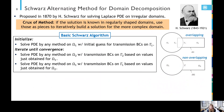The first topic is the Schwartz alternating method. The Schwartz alternating method is perhaps the oldest known method for domain decomposition, proposed in 1870 by Hermann Schwartz for solving the Laplace equation on irregular domains. It's based on a very simple idea: if you want to solve a problem on a complex domain, you can decompose it into simpler subdomains and then use solutions on those simpler subdomains to iteratively build the solution on the more complex domain. A couple of examples of different decompositions are shown — you could have an overlapping or a non-overlapping decomposition.